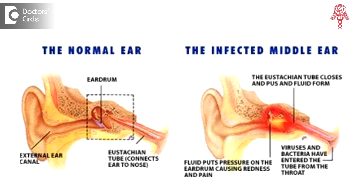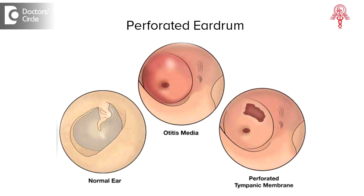Middle ear infections start off with fullness and pain, which can vary from mild, moderate, dull pain to intense, sharp, lancinating pain, as well as a drop in the level of hearing to the extent of about 50% in some severe cases. Infections which cause a perforation in the ear drum can cause more significant hearing loss as well as discharge.